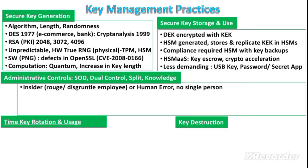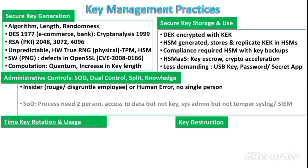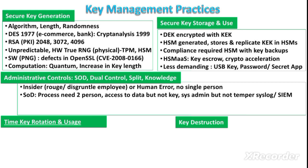Regarding administrative controls on key management practices, the purpose of these controls is to counter the insider threat of a rogue or disgruntled employee, or to prevent human error. The overall objective is that no single person should perform all key management practices. In separation of duties, the encryption or decryption process requires at least two persons — for example, one person has access to the data and another has access to the key, or a system admin may use system functions but cannot tamper with system activity logs.